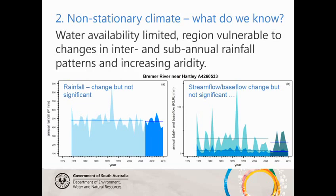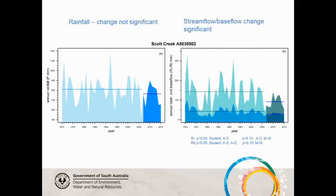Rainfall is a little bit lower but not significantly. Streamflow and baseflow — total flow here; baseflow is the part that comes out of the ground — that's changed as well, gotten a little bit lower since the WAP, but not significantly so. Going across to Scott Creek, rainfall is still not significantly different to the WAP period. However, total flow and baseflow is significant in three out of four performance criteria used in that assessment. Some surface processes seem to be changing in some places.